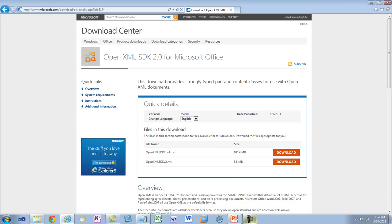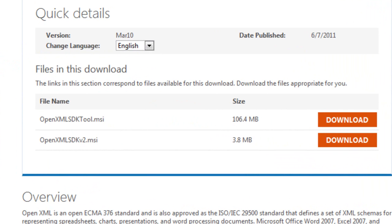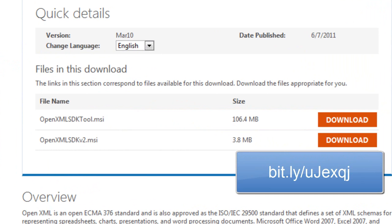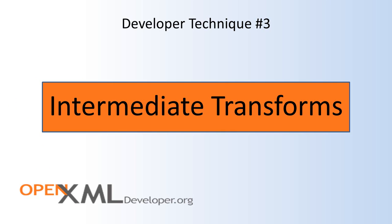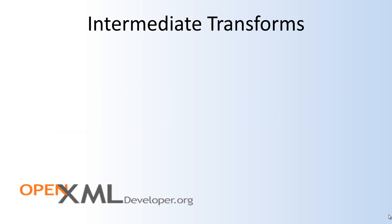When doing development using the OpenXML SDK v2.0, one of the important tools you will want to use is the code generation features of the OpenXML SDK productivity tool. You can download the productivity tool at this location. One of the approaches that I return to over and over again in OpenXML development is that of writing intermediate transforms — transforming the OpenXML markup as found in the document to some other form that makes it easier to accomplish the task at hand.